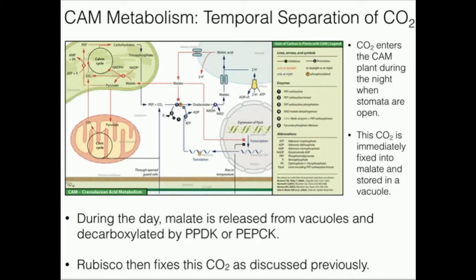Flip forward a few hours to during the day. Now the stomata are closed to prevent loss of water due to evaporation, so CO2 can't come in. We're going to deal with the carbons that have already come in — remember, they're stored in a vacuole as malate. During the day, the malate is going to be released from the vacuoles and decarboxylated by one of two enzymes. Once it's decarboxylated, that CO2 is fixed by Rubisco.